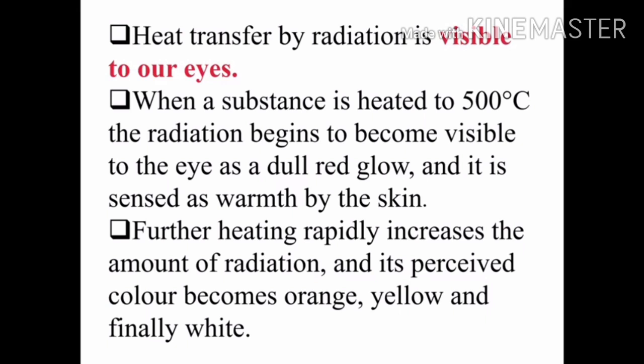Do you know: heat transfer by radiation becomes visible to our eyes when a substance is heated to 500 degrees Celsius — the radiation begins to become visible as a dull red glow and is sensed as warmth by the skin. Further heating rapidly increases the amount of radiation, and the perceived color becomes orange, yellow, and finally white. Today's topic on heat transfer — conduction, convection, and radiation — is now complete. Thank you.